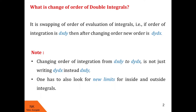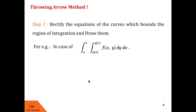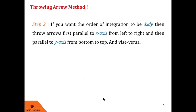So let us understand the steps involved in this technique. I call this method the throwing arrow method. Step one involves rectification of equations of curves which bound the region of integration and drawing of them. For example, in the case of a double integral of f dy dx over limits p to q and a to b, the curves which bound the region are y = p(x), y = q(x), x = a, and x = b.